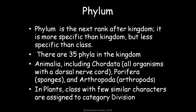Then we come to phylum. Phylum is the next rank after kingdom — more specific than kingdom but less specific than class. There are 35 phyla in the kingdom Animalia, including Chordata for organisms with a dorsal nerve cord, Porifera for sponges, and Arthropoda for arthropods. They are classified on the basis of certain resemblances. In plants, a similar grouping is called division.